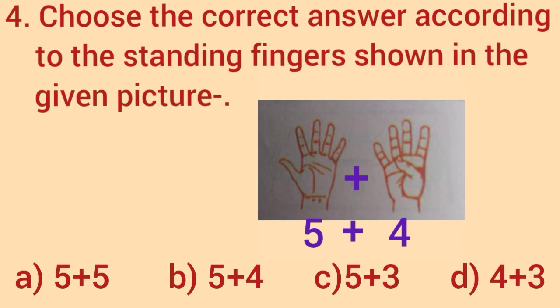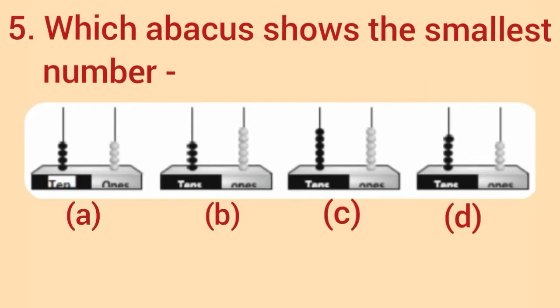C, 5 plus 3. D, 4 plus 3. So, the right answer is option B. So, we put a tick on option B.